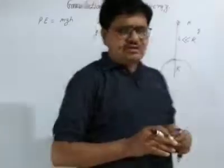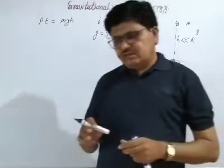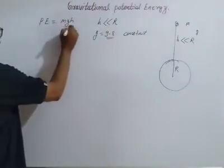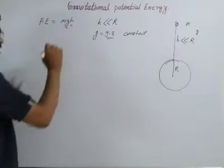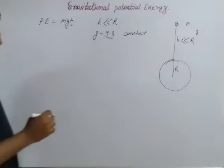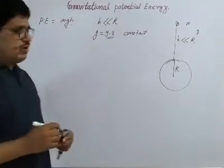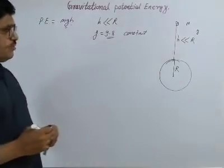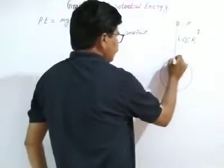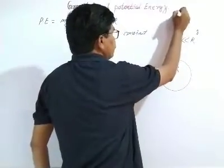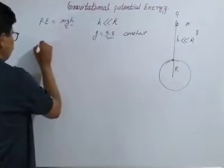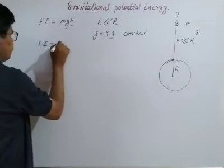The gravitational potential energy is the relative energy which is related to the acceleration due to gravity and the height of the object from the surface of the earth. When the height of the object goes on increasing from the surface of the earth, the value of the potential energy also goes on increasing.